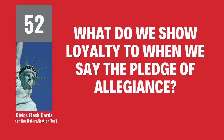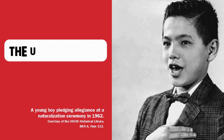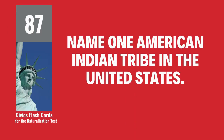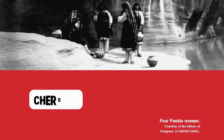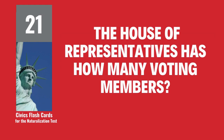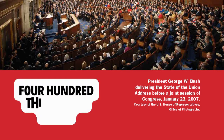What do we show loyalty to when we say the Pledge of Allegiance? The United States. Name one American Indian tribe in the United States. Cherokee. The House of Representatives has how many voting members? 435.